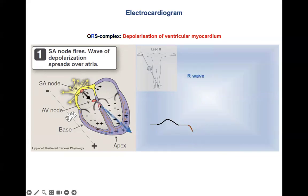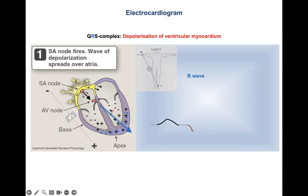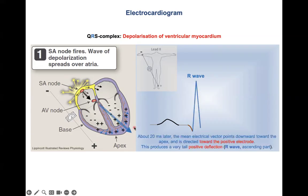Next, we have the blue vector, which is the strongest by far. It represents the largest parts of the ventricles being almost instantaneously depolarized. This depolarization wave spreads from the minus electrode to the plus electrode, producing a positive deflection with many millions of cells — large mass — resulting in a strong deflection. This is the R wave.